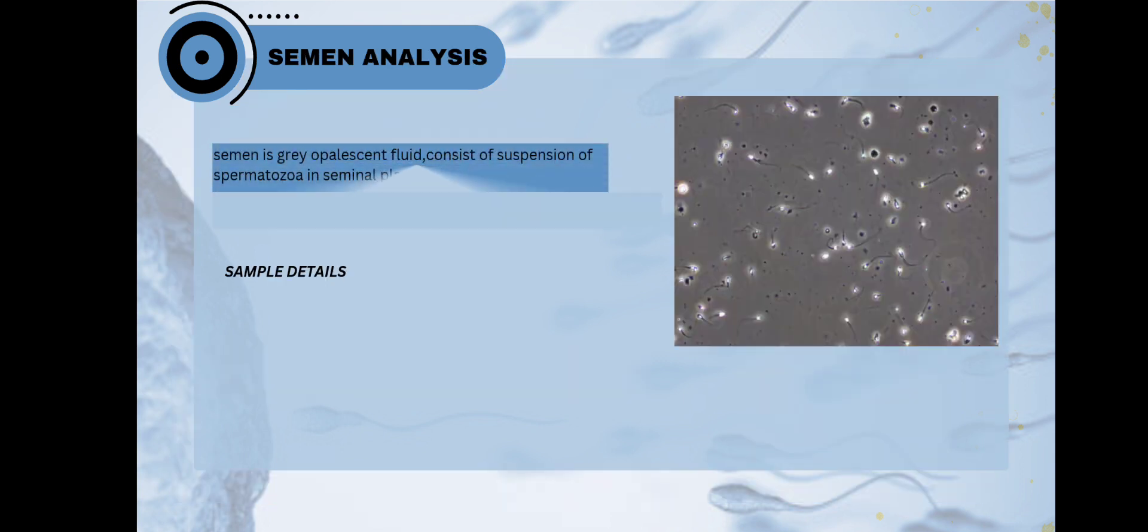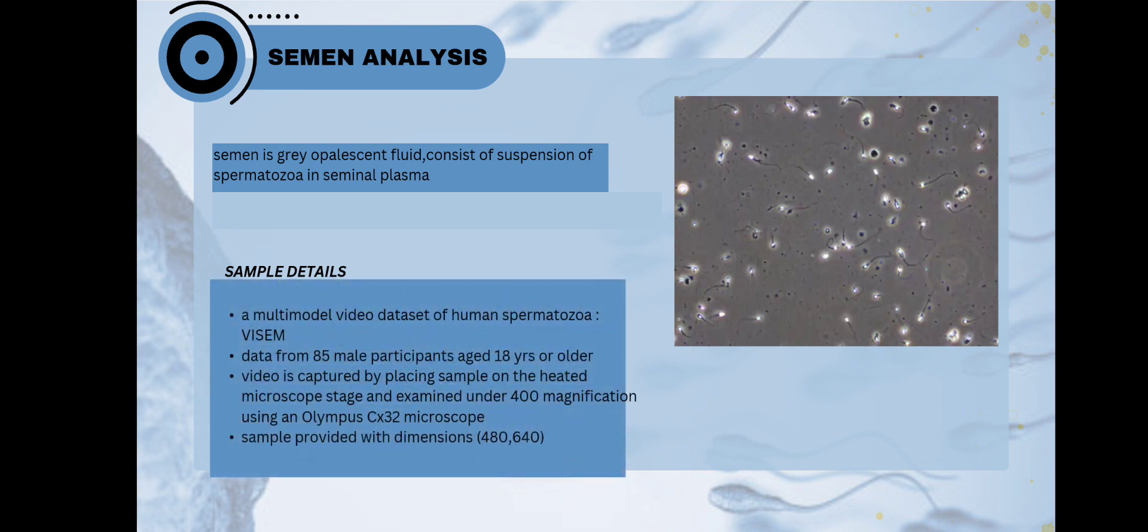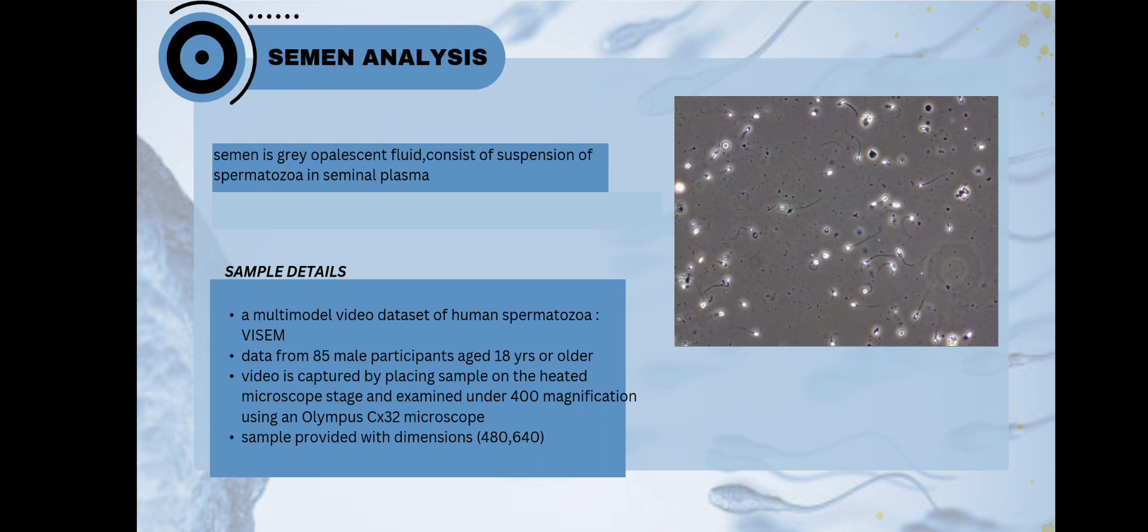Let's study about the semen analysis, how sperms are moving and what we are going to conclude. Basically, semen is a fluid consisting of sperms and seminal plasma. For our experiment, we get the data from the multi-modal video dataset called VSM. In this dataset, the samples are provided for 85 different people. We get a sample which shows the movement of the sperm cells. We get this by capturing a video by placing the sample under the microscope.